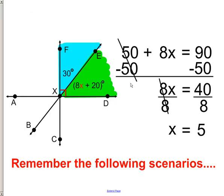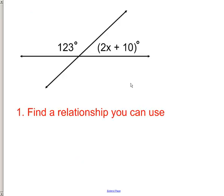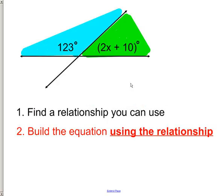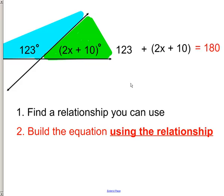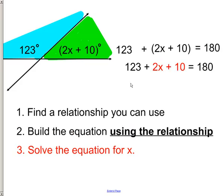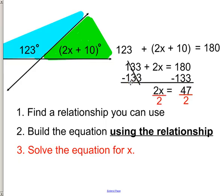This works for other scenarios also. If you had a supplementary situation like this right here, you'd see that the two angles together would be 180 degrees. You'd just go and build your equation, and then you would just go and solve. And sometimes you really do get to a point where it's got a decimal in there. That shouldn't phase you.